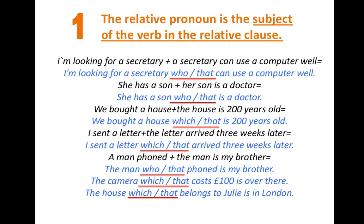Can we separate that sentence into two different clauses — the opposite procedure? 'The camera costs a hundred pounds' and 'The camera is over there.' In this case, we use the relative pronoun 'which' or 'that' to replace 'the camera,' and 'which' or 'that' is also the subject of the relative clause.